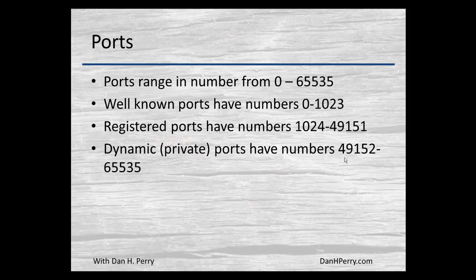Not every number between 0 and 1023 is actually used, but all of the well-known ports are in that range. From 1024 to 49,151, we have what are called registered ports. Many of those numbers indicate a specific application that usually uses them — for example, an application called VNC uses port 5900. However, because they are registered ports, you are not required to use those ports; any application can actually use them, though there are a few ports that are well-known in that they typically use it.